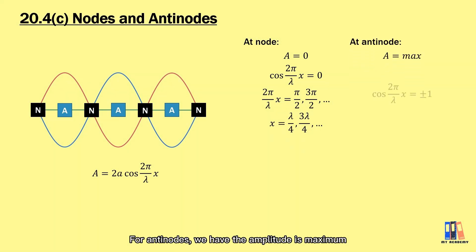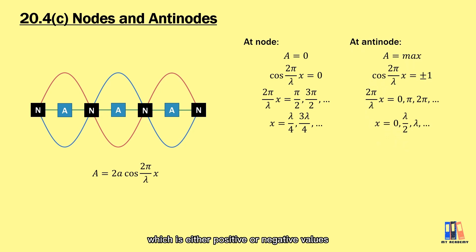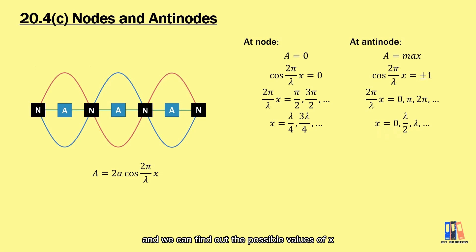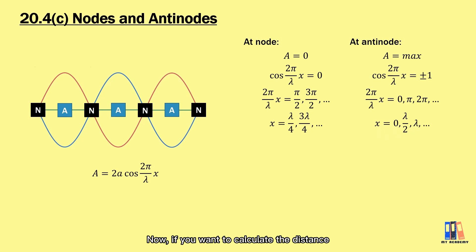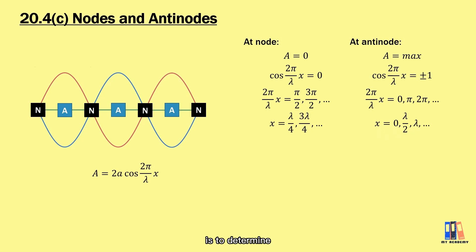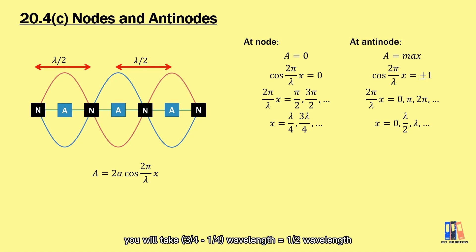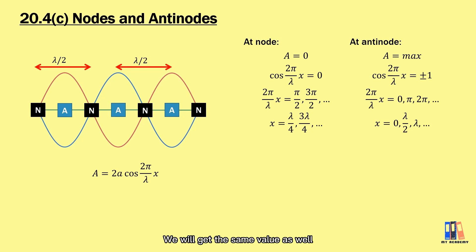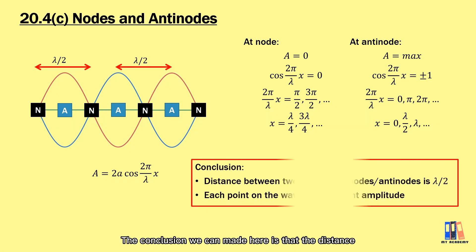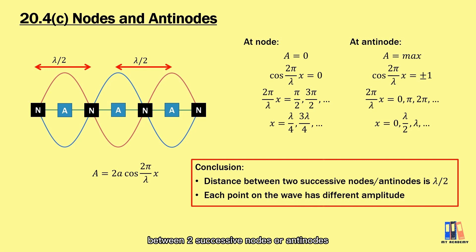For antinodes, the amplitude is at its maximum — either positive or negative. Solving again, the possible values of x for antinodes are 0, λ/2, λ, and so on. To calculate the distance between two successive nodes or antinodes, find the difference between consecutive values. For nodes, 3λ/4 − λ/4 = λ/2. We get the same result for antinodes. The conclusion is that the distance between two successive nodes or antinodes equals half the wavelength of the progressive wave.